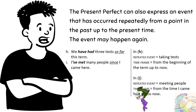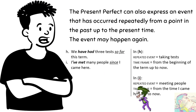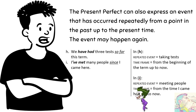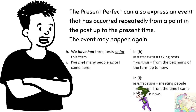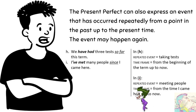Present perfect juga bisa digunakan untuk menjelaskan event atau kejadian yang sudah terjadi di masa lampau dan terjadi berulang kali sampai saat ini. Contoh: We have had 3 tests so far this term — kita sudah menjalani 3 test sejauh ini. Apakah masih bisa berlanjut? Bisa jadi 4 atau 5 test. Dimulai dari 1 test di masa lampau sampai saat ini sudah 3 kali.